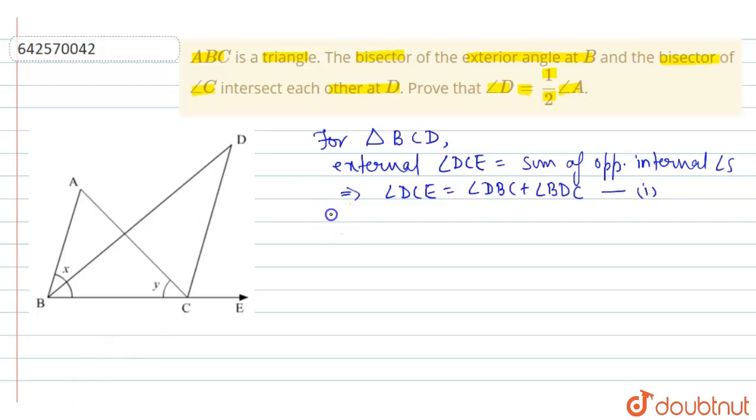Now similarly angle ACE will be equal to angle ABC plus angle BAC for triangle ABC, and this is our equation number 2.